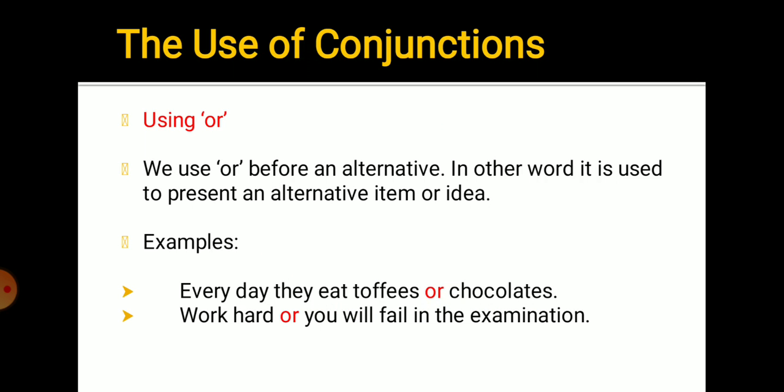Or. We use or before an alternative. It is used to present an alternative item or idea. When you have options to choose from - this or that. Either choose red pen or blue pen. They eat toffees or chocolates. Or is used to show choice, option, and is used before alternatives. Toffee or chocolate - either toffee or chocolate. Work hard or you will fail in the exam. There is an alternate.